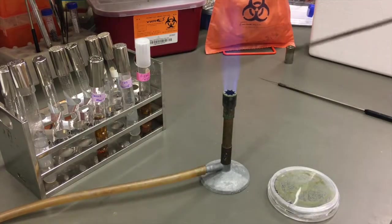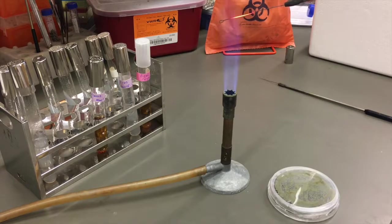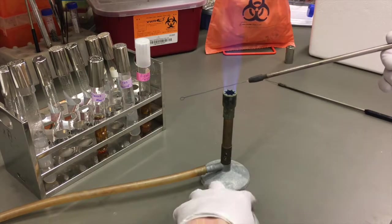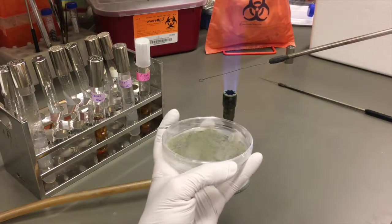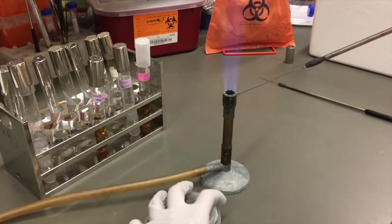We are going to take our inoculation loop, sterilizing in the inner cone of that Bunsen burner flame where it is hottest going from base to tip. Maintaining that loop within the sterile zone as it is cooling we are going to open our agar plate and lightly touch it to the culture to collect some.